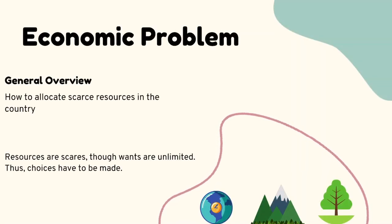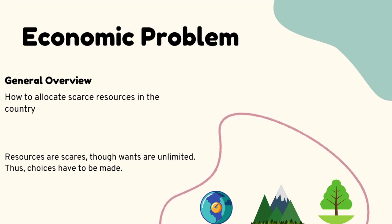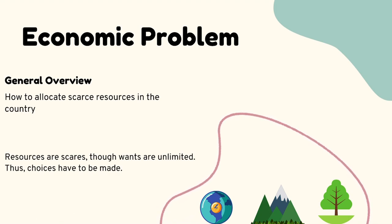The economic problem, in general overview, is about the way the allocation of scarce resources works in the country. Resources are scarce and wants are unlimited — so you have finite resources and infinite wants, which means you cannot get everything you want. Thus, choices have to be made.